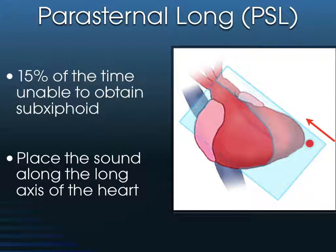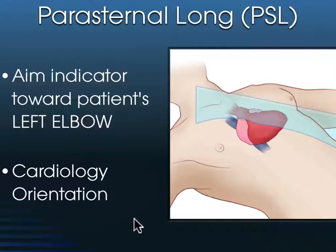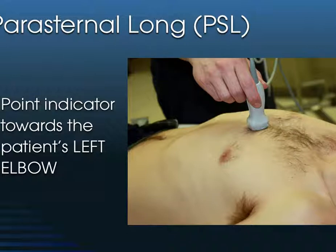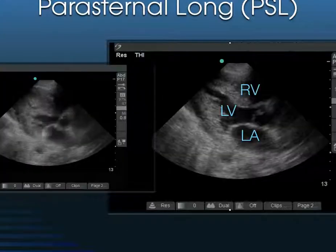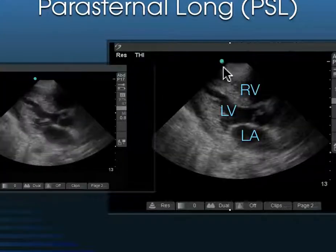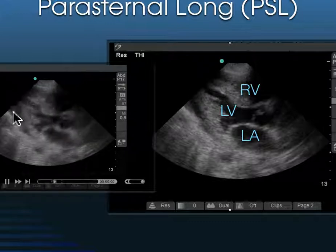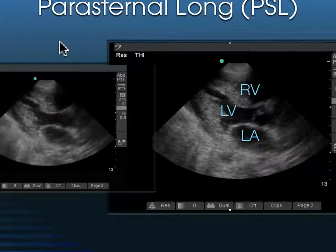As its name suggests, parasternal means next to the sternum, in the long axis of the heart. We use the cardiology orientation, where we take the indicator and aim it so that the apex is towards the indicator on the screen. Here's our sternum right here — we're just to the side of it. That's the indicator, that little nipple with the groove next to it. We aim that indicator towards the patient's left. Therefore, the apex of the heart will be on the side of the screen where the indicator is.